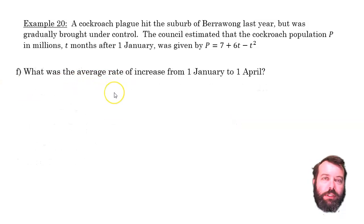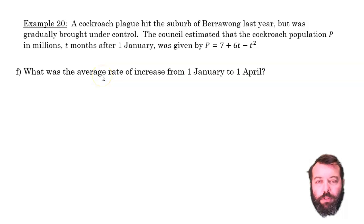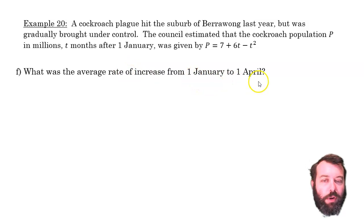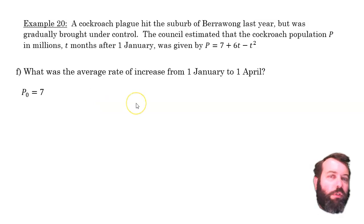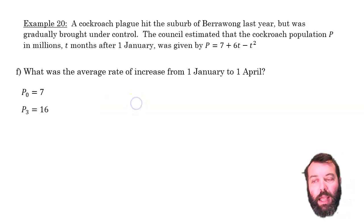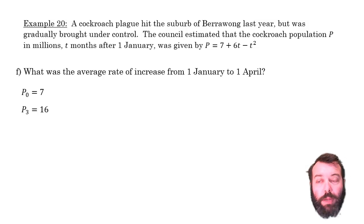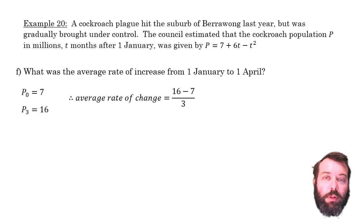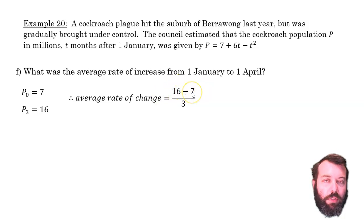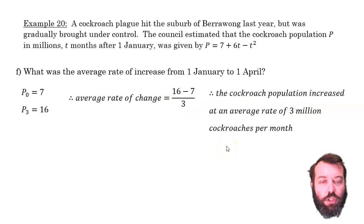Now for the average rate of increase. I need the population on the 1st of January and on the 1st of April, and the time between them. We've already worked out: January was 7 million, April was 16 million — a rise of 9 million over 3 months. The average rate of change is (16 − 7) ÷ 3 = 3 million cockroaches per month over that period.